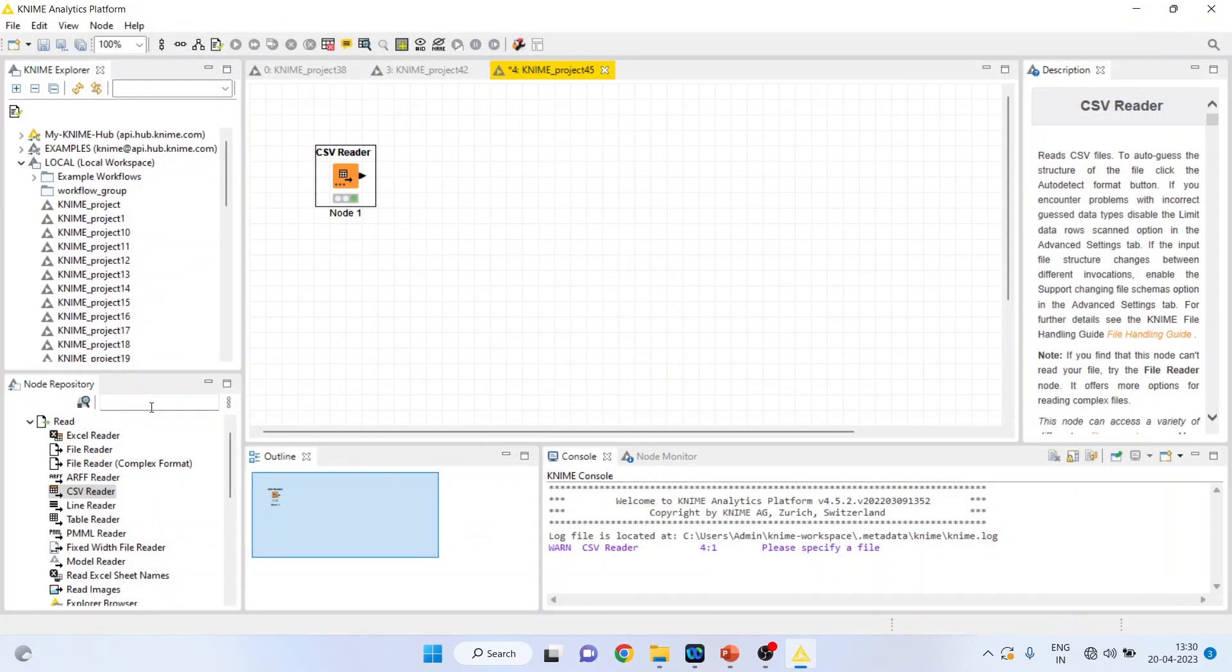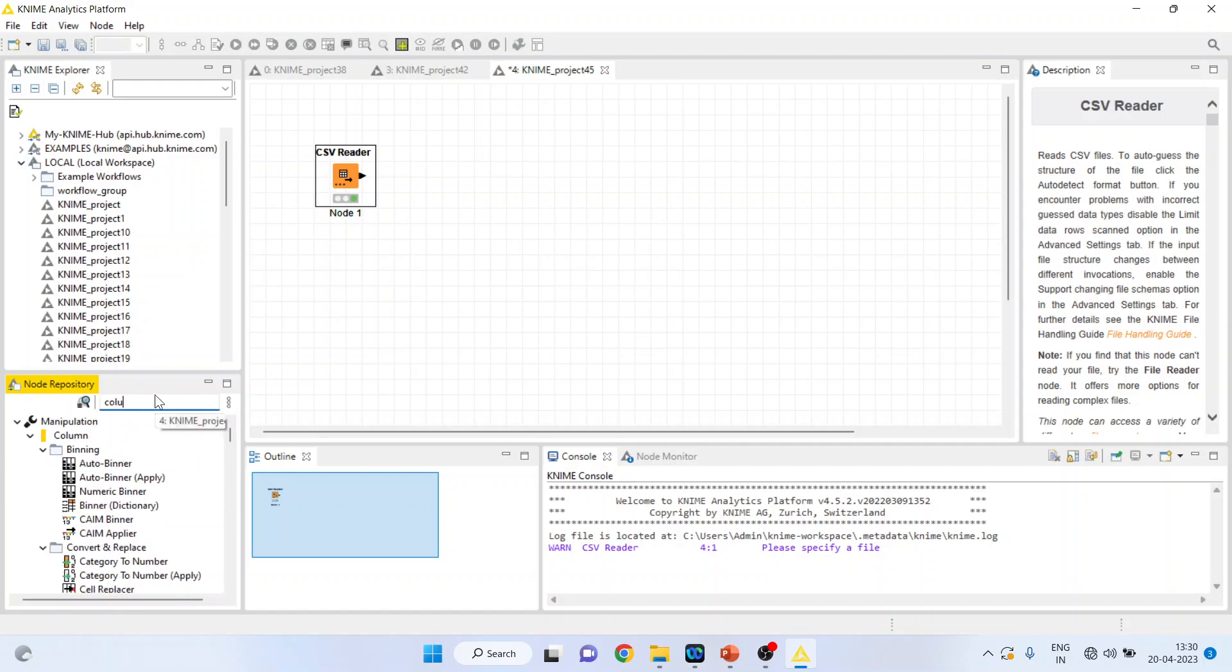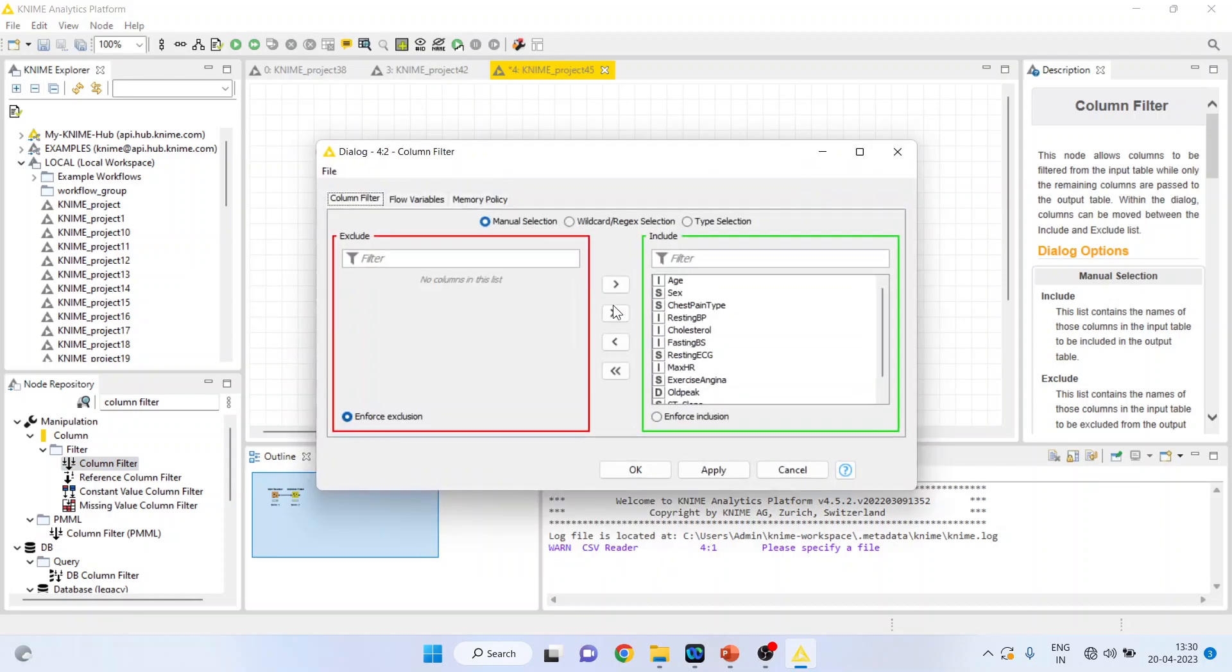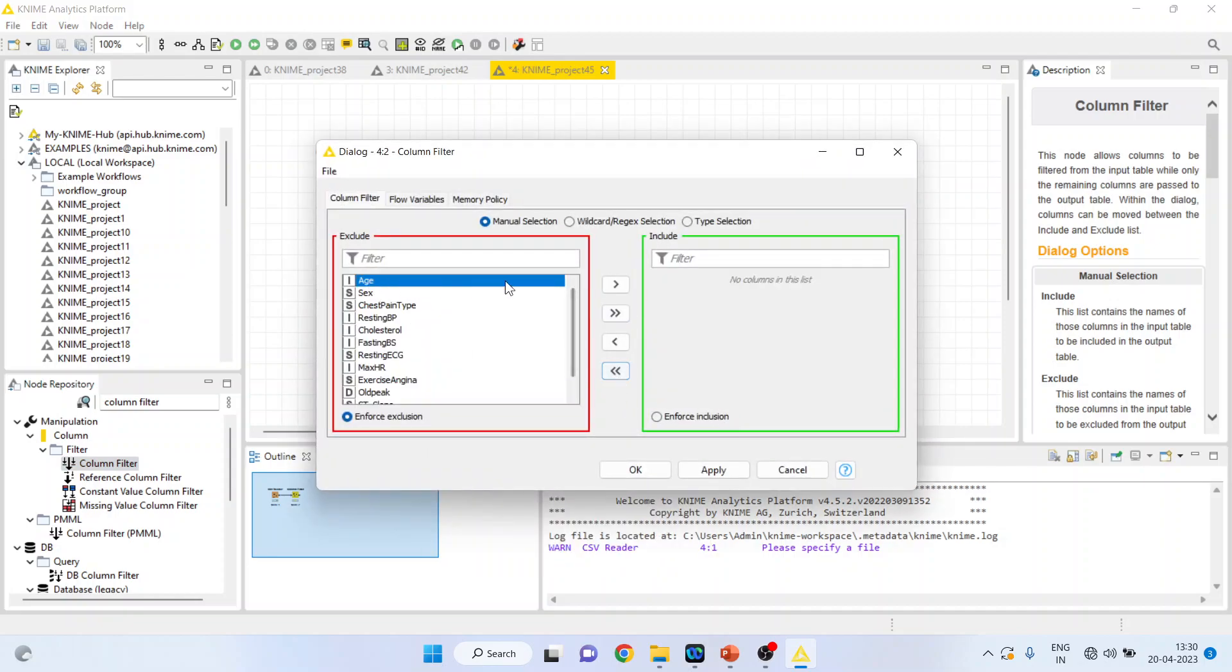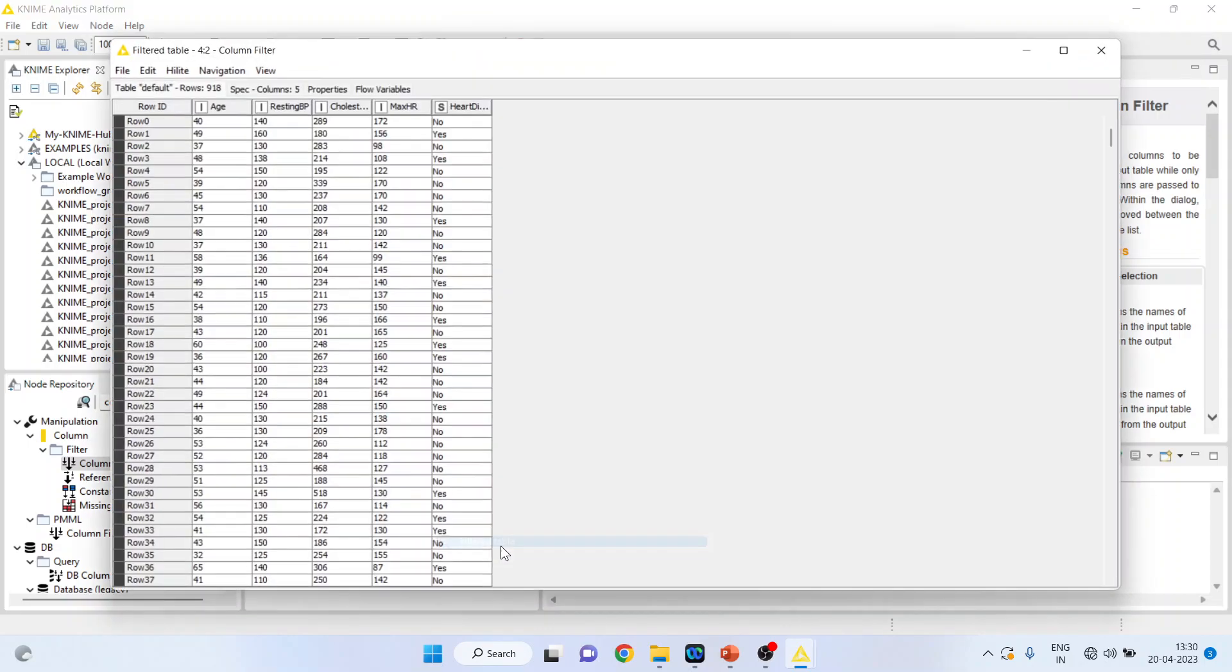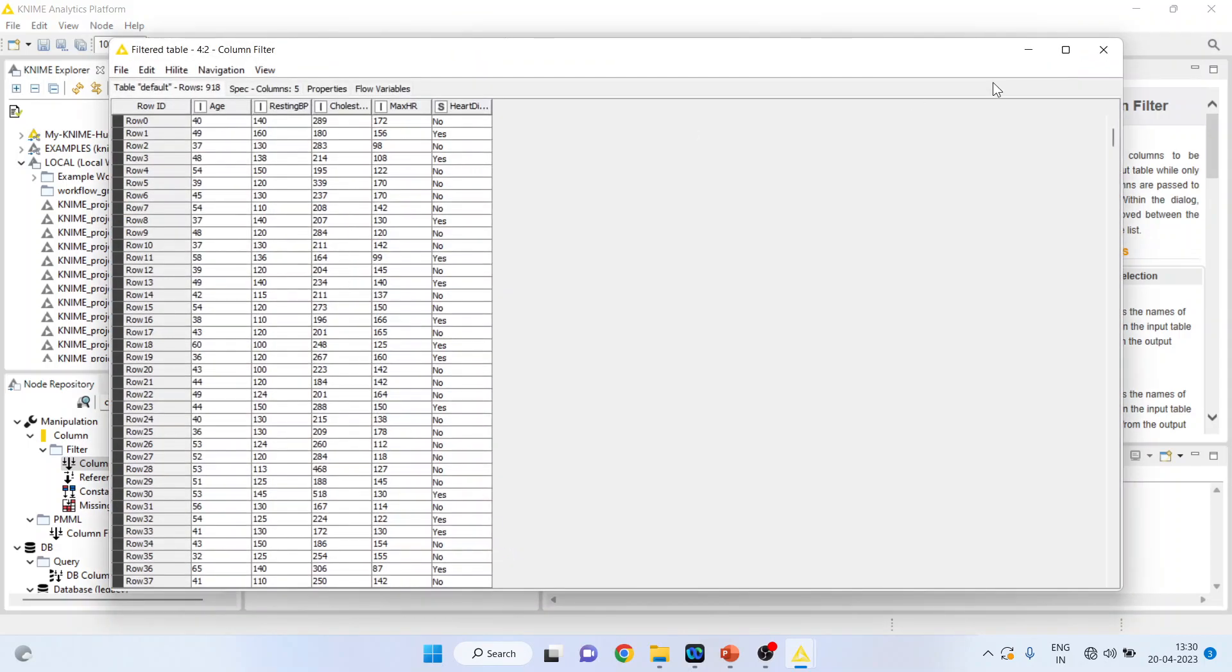So we will activate the column filter so that only those variables are selected which are necessary in our model. Right-click on it and configure. Remove all other variables. Only include age, resting blood pressure, cholesterol, maximum hours of exercise and heart disease. Click OK. Right-click on it and execute. Again, right-click on it and see the filtered table. Quite good.